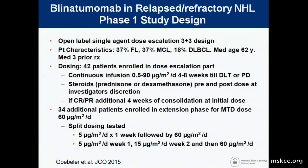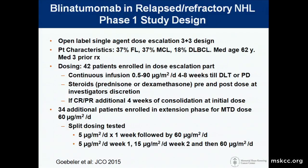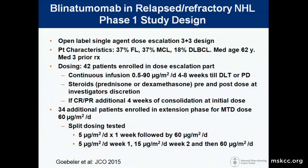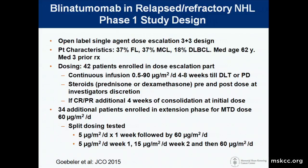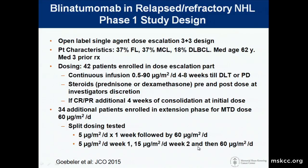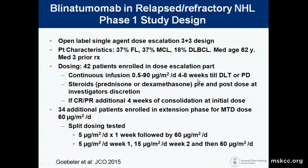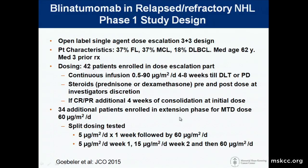The blinatumomab phase one study in relapsed refractory NHL used a 3+3 design. Patients had follicular, mantle cell, and large cell lymphoma, with a median of three prior therapies and were in their 60s. This was a continuous infusion given for four to eight weeks or until DLT or progression. There was a re-treatment or consolidation dose for patients who achieved CR or PR, and steroids could be given at investigator discretion. Thirty-four patients were enrolled in an extension study at the MTD of 60 micrograms per meter squared.